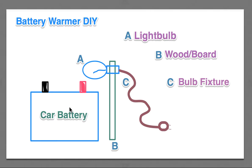So, over here is the car battery. Next to the car battery is a wood board or some plywood, and then above that is a standard light bulb.